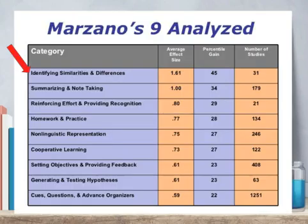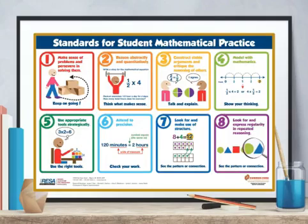We're familiar with Marzano's meta-analysis, and one of his top strategies is identifying similarities and differences. As we continue, we're going to keep coming back to how these number sense routines allow students to find similarities and differences. We know this is a high-yield strategy, so let's engage kids in routines that give them opportunities for those strategies.